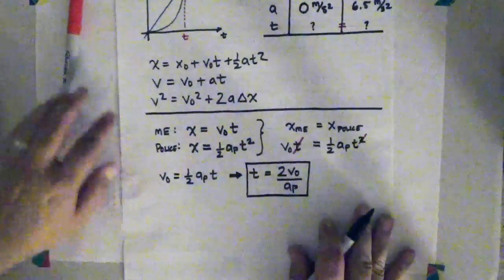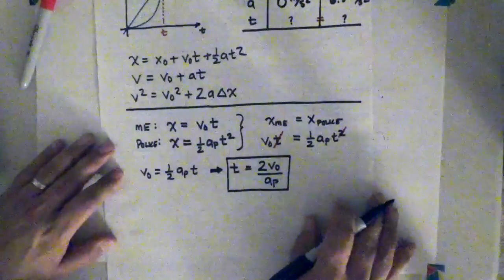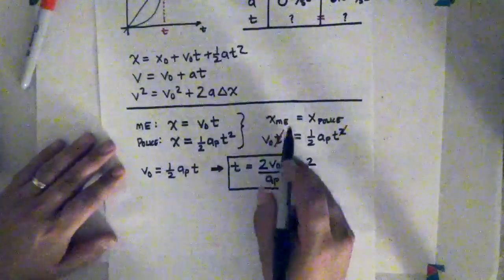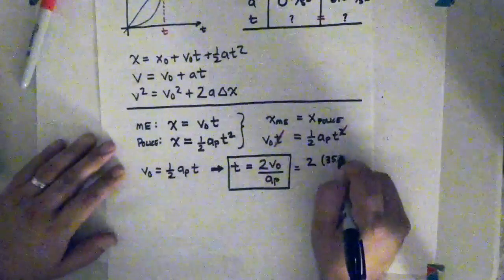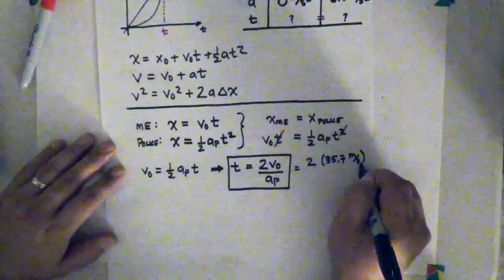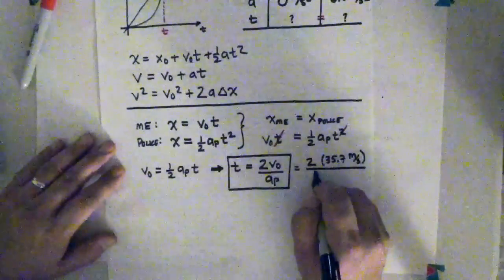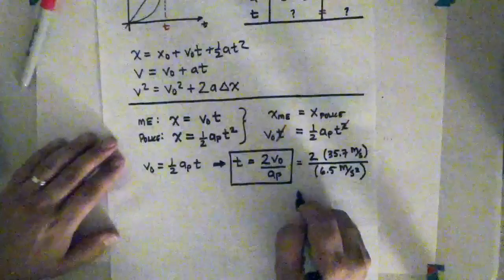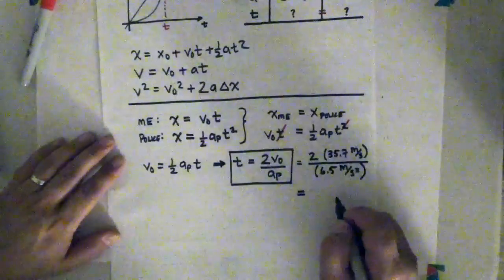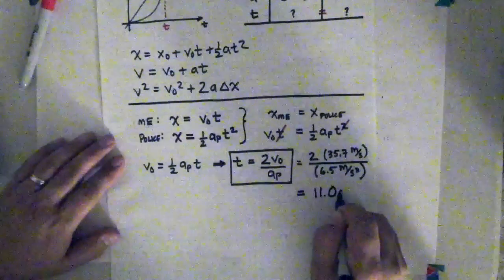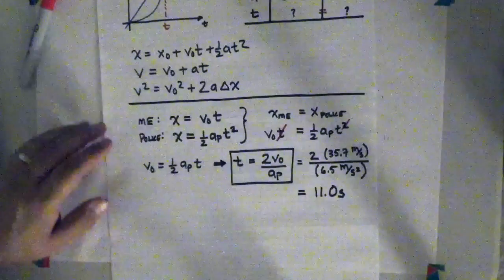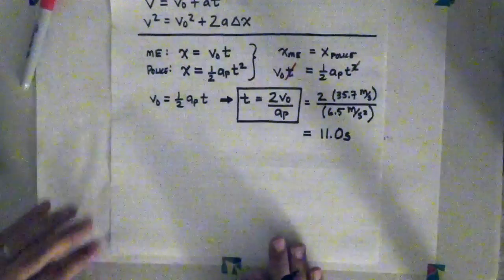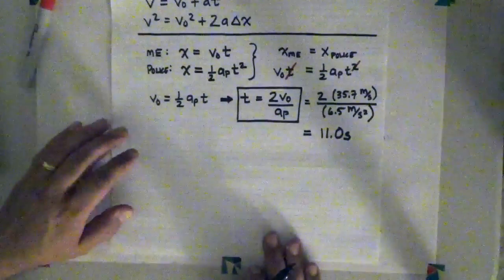So that is the time it takes for her to actually catch me. I can substitute in numbers. So this is 2. This v naught is my initial speed, so that's 35.7 meters per second. This a is her acceleration. That's 6.5 meters per second per second. And if I punch those numbers in, I find that she catches me after 11 seconds. So that's the first bit. How much time does it take her to catch me?